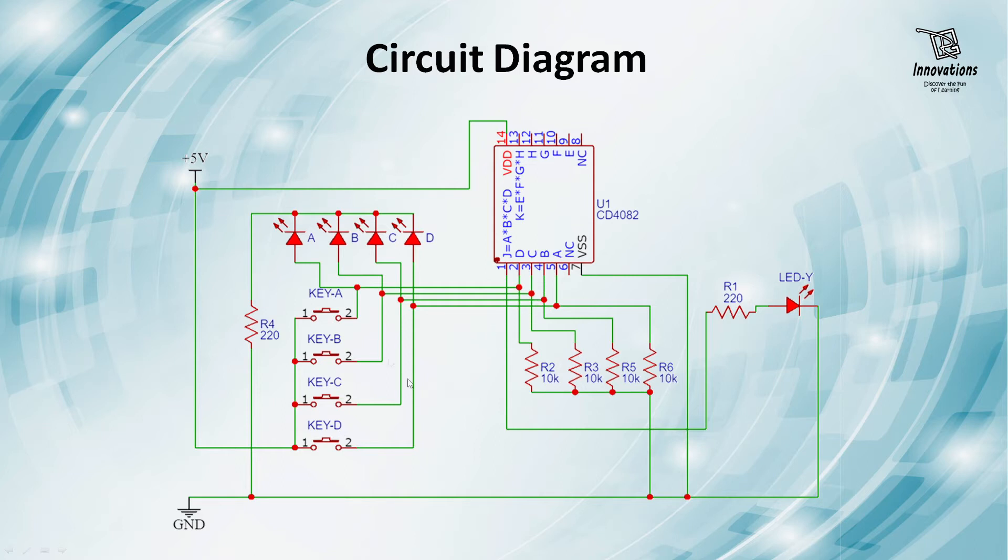We will provide the input to the IC. When the switches are pressed, the input will be high or 1. And when the switches are released, the input will be low or 0. We have connected four LEDs with four switches: LED A, LED B, LED C and LED D corresponding with the switches. When the switches are pressed, the LEDs will glow to indicate the input status.